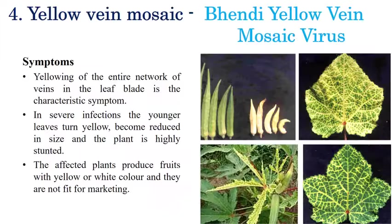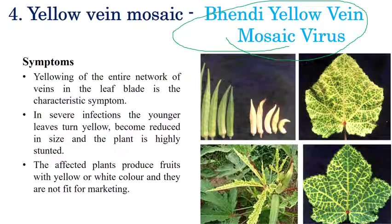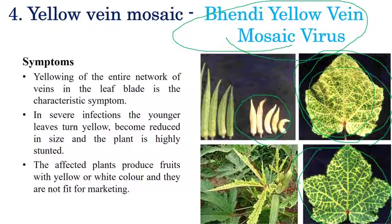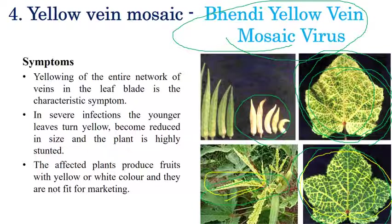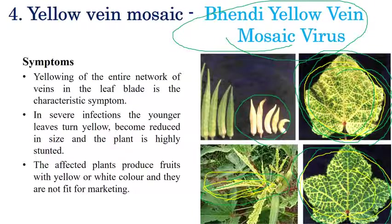The next disease is yellow vein mosaic, caused by Bhendi Yellow Vein Mosaic Virus. As the name suggests, yellowing of veins is the characteristic symptom. Initially, alternate green and yellow patches can be seen on the entire leaf, which later converts to complete yellowing. The size of the leaf can also be reduced, along with reduction in fruit size and fruit quality.